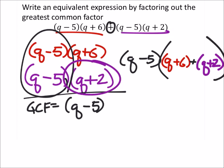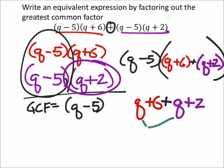Now because we'd be pretty exhausted by this point, we would want to quit here, but don't. Remember, if you see q plus six plus q plus two, you could simplify that. Combine the q's to get 2q, and the six and the two would be plus eight.